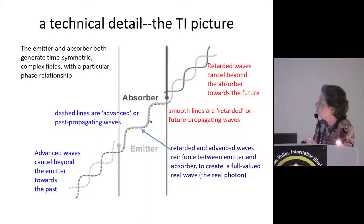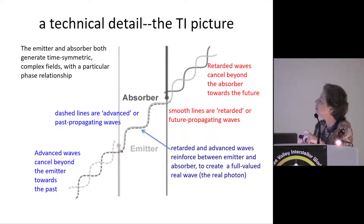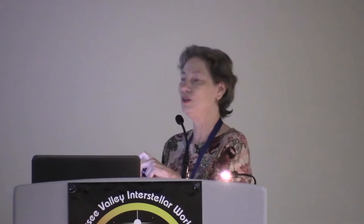We end up getting a real-valued, full-strength wave that goes from the emitter to the absorber. The fine print is that both the emitter and the absorber are actually generating time-symmetric fields that are only half strength and complex. The emitter is going partly into the future and partly into the past; so is the absorber. They superimpose such that between the emitter and the absorber, we get a real-valued field. But beyond the emitter toward the past, everything cancels out, and toward the future of the absorber, everything cancels out. This gives a nice, elegant physical picture of how we end up seeing what we do see: real energy propagating from the emitter to the absorber.